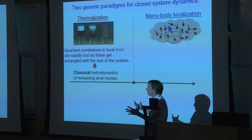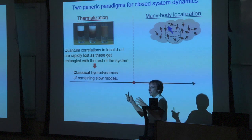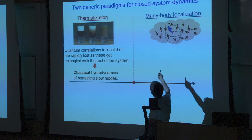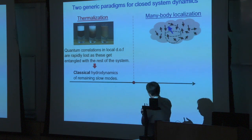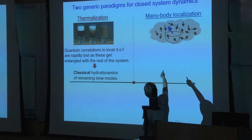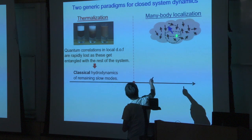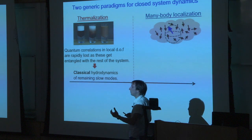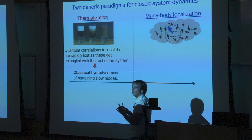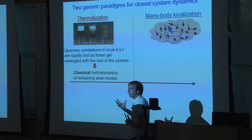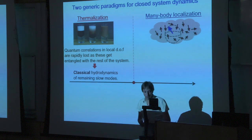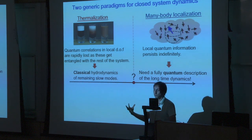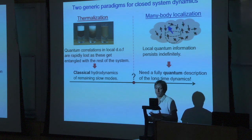By robust, I mean a system where you can change various interactions within a reasonable range and it will stay in the same state of dynamics — which is called many-body localization. You can imagine the same kind of system of quantum spins, but now if you encode some quantum information, local quantum information, to one or two spins, that information will remain localized in this spin forever. You can retrieve it even after a very long time. This is a many-body localized state. Local quantum information persists, and therefore you need a fully quantum description even to understand the long-time dynamics.